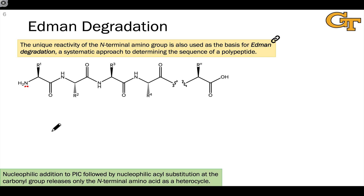The essential idea is to treat the polypeptide with a reagent that attaches to the N-terminus and subsequently reacts with the carbonyl carbon to release the next nitrogen along the backbone as a leaving group, creating a new N-terminus. This also creates a heterocycle which can be isolated to determine the identity of R1, the N-terminal amino acid.